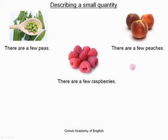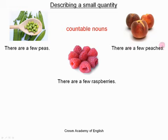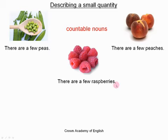The first thing we should look at is all of these nouns — they are countable nouns. A countable noun is a noun that is a separate object. We can count a countable noun. Countable nouns can exist in the singular or the plural. That is very important. Here, of course, they are all in the plural.